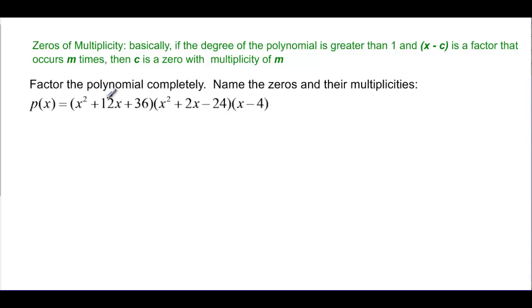So this says factor completely, name the zeros and their multiplicities. So this would be x and x and factors of 36 that add up to 12 would be plus 6 and plus 6. And then in here I'm going to have x and x and factors of negative 24 that add up to 2 would be plus 6 and minus 4. And then I have this x minus 4. So all three of them are completely factored now.